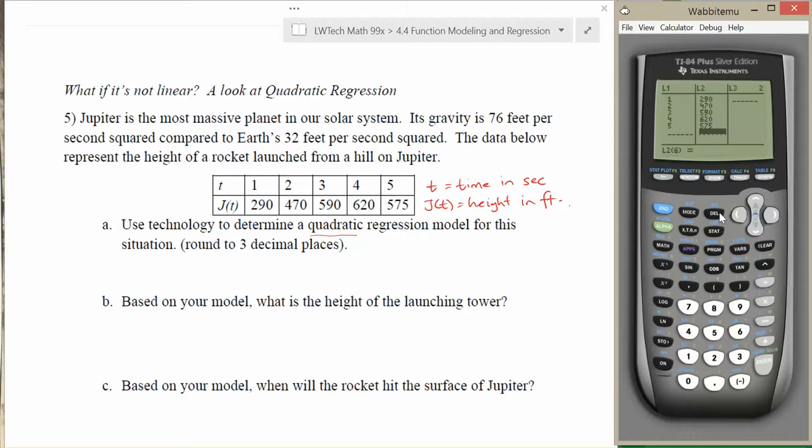Now once you have all the data in here, remember we can look at a graph of what this data looks like. If we click on zoom and arrow down to find zoom stat. You can see why we may want to choose a parabola instead of a linear equation, because our data seems to come up and then kind of top off and start heading back down. And if you think about throwing a rocket up into the air, we've been using quadratic models for that type of behavior, because it goes up, levels off, comes back down. So finding a quadratic equation is going to be much better than a linear equation.